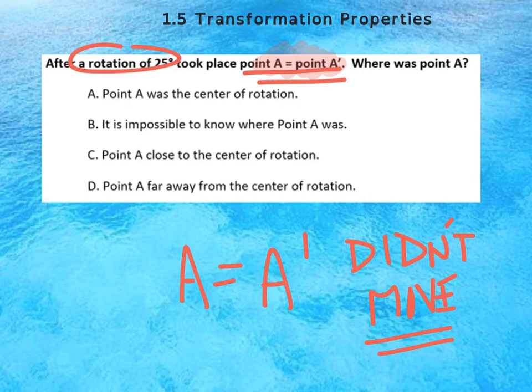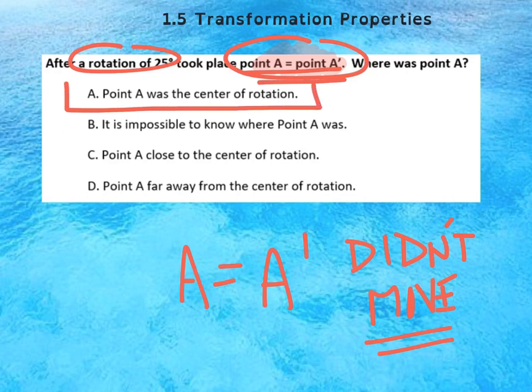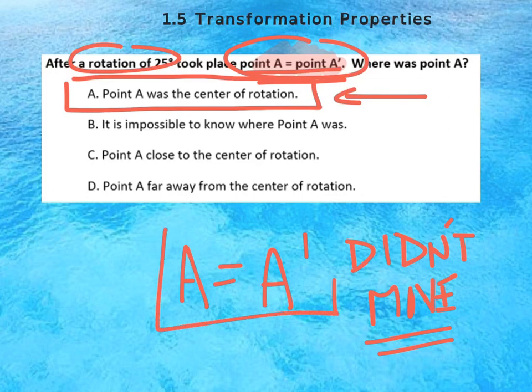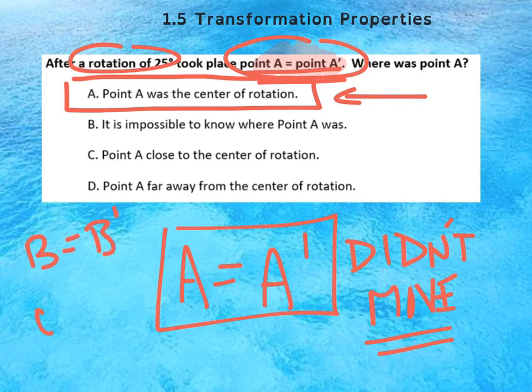So that's a really important idea. This says you've done a rotation and it didn't move, it's invariant. What that has to mean, if you did a rotation and it didn't move, it means it had to be the center of rotation. That's the only point that doesn't move when you do a rotation. So A equaling A' or B equaling B' or O equaling O' means it did not move, it's invariant.